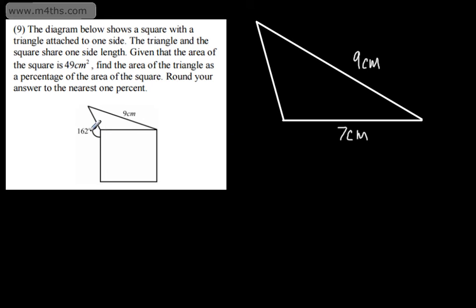Angles around a point sum to 360 degrees. We've got a 90 degree right angle here, so that's going to leave me that this angle inside the triangle is 108 degrees. So that's the information I can take from the question, and now I need to find the area of this triangle.